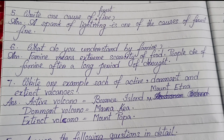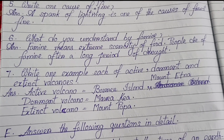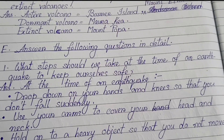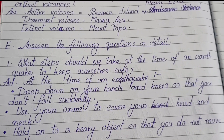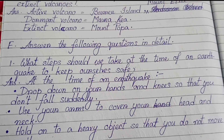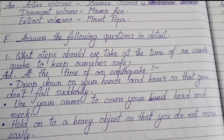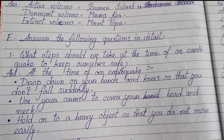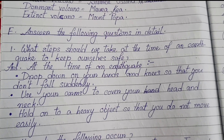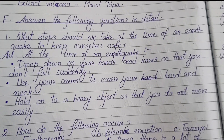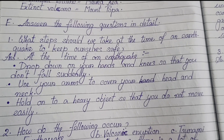Active volcano: Barren Island / Mount Etna. Dormant volcano: Mauna Kea. Extinct volcano: Mount Papa. Next, Number E: Answer the following questions in detail. Number one: What steps should we take at the time of an earthquake to keep ourselves safe? Drop down on your hands and knees so that you don't fall suddenly. Use your arms to cover your head and neck. Hold on to a heavy object so that you do not move easily.